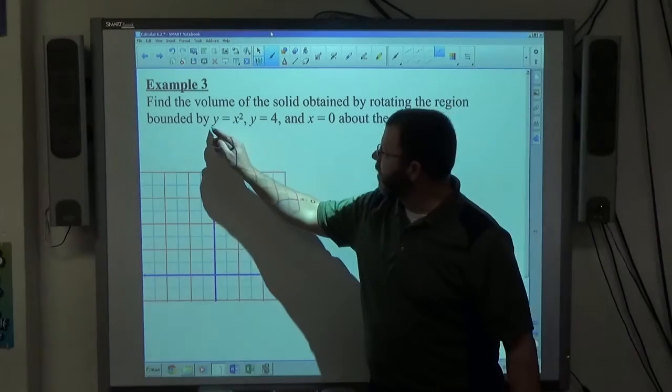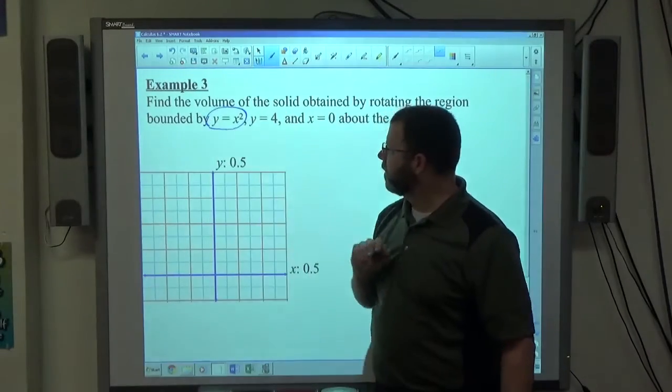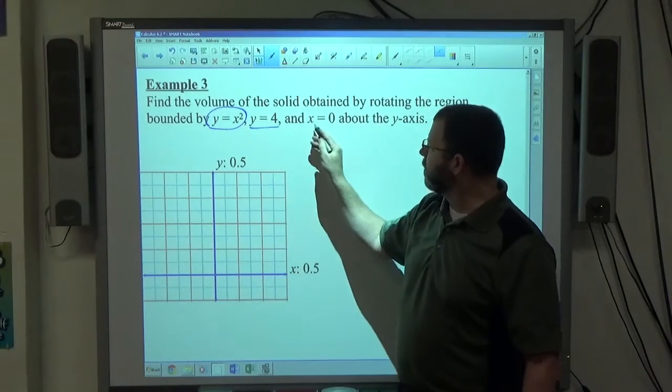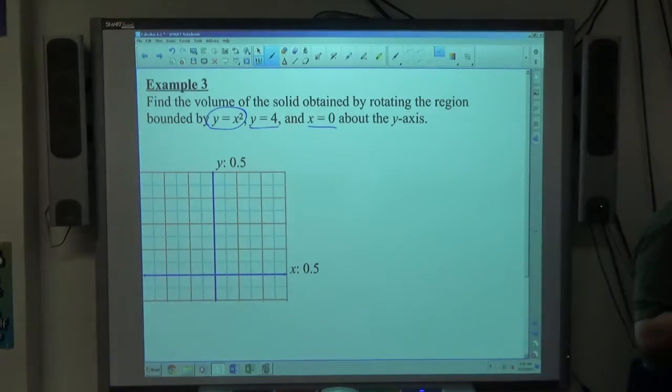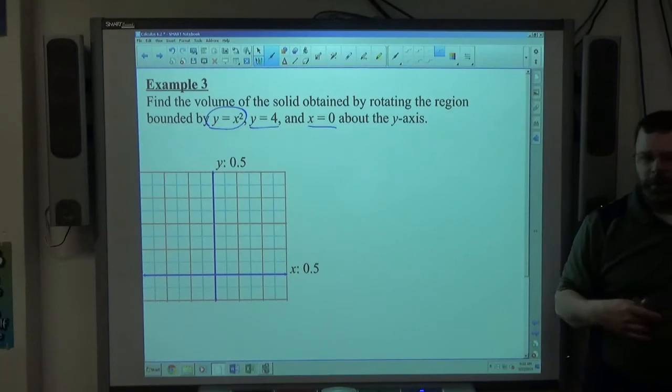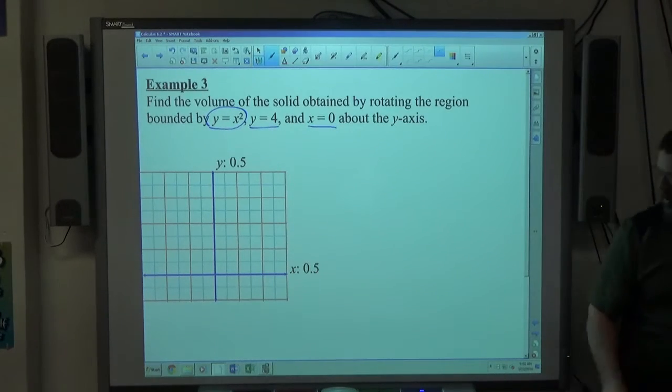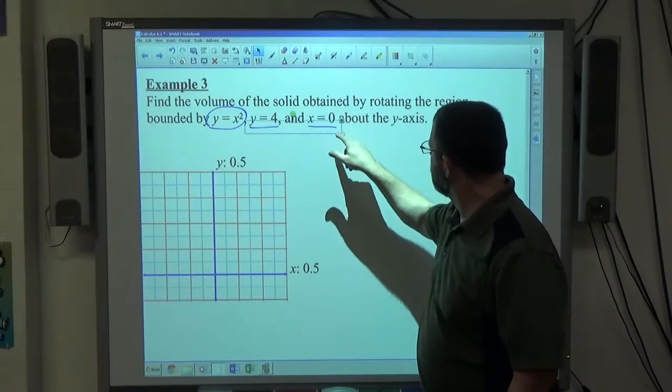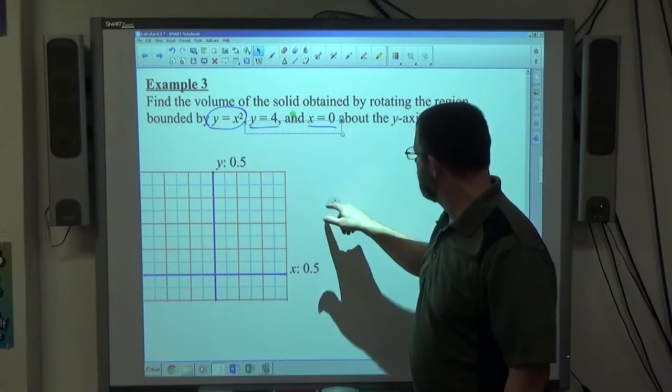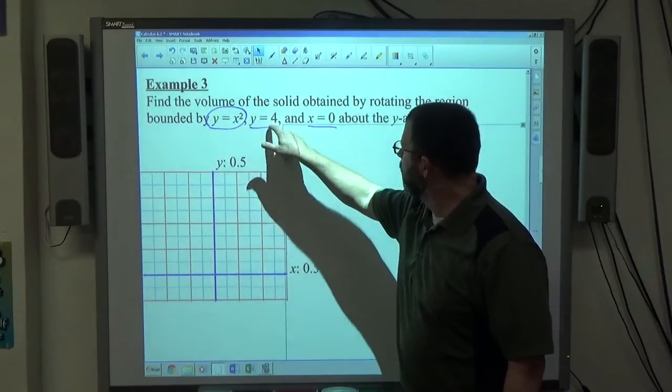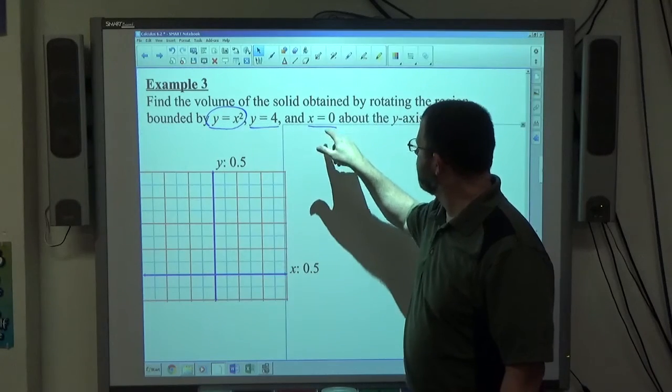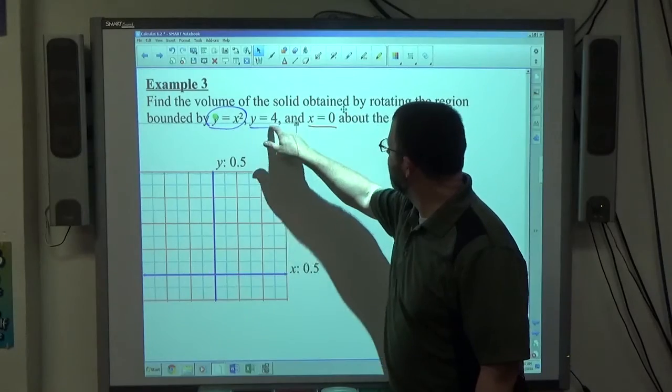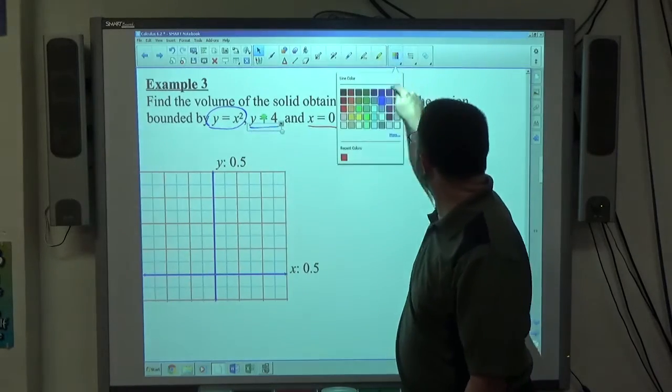Notice here it says y equals x squared, and then we have y equals 4 and x equals 0. So we're looking to create a region here with those three graphs. Let me use some different colors here, go red for that and go green for that.